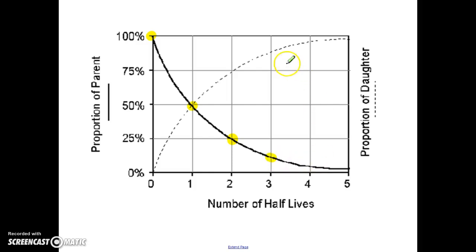Now, if you're thinking this through, you hopefully realize that if we keep taking away half, we're never going to get to zero. Because if you take away a half and a half and a half and a half, you'll never reach zero. So the parent material will never completely decay, and the daughter material will never reach 100%.